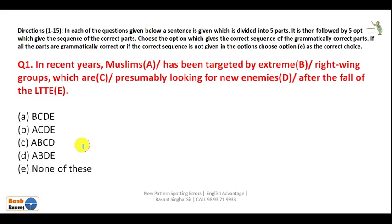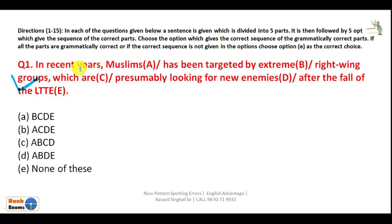For example, this is a spotting-the-error question. This particular sentence is divided into five parts and one of the five parts is grammatically wrong. You have to eliminate that part. Now the sentence reads: 'In recent years Muslims has been...' You can spot the error here — this subject 'Muslims' being plural, you cannot say 'has been'; you have to say 'have been' because Muslims is a plural subject.